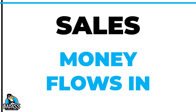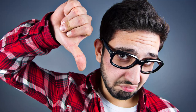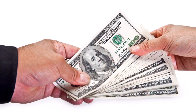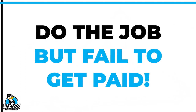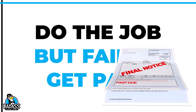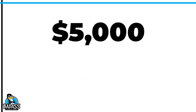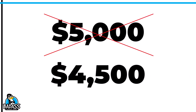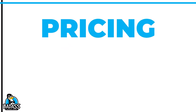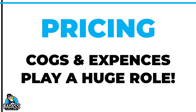Money flows into the business through sales. However, if you aren't priced correctly, then you don't have enough sales coming in. If you don't collect the money you are owed, you won't have all the sales you should either. Many small business owners do a job yet fail to get paid — they don't invoice in a timely manner. They did $5,000 in sales but only collected $4,500. Sometimes your loss of money happens before you pay anything. It is critical that you are priced correctly, and your cost of goods and expenses are key components to pricing the right way.